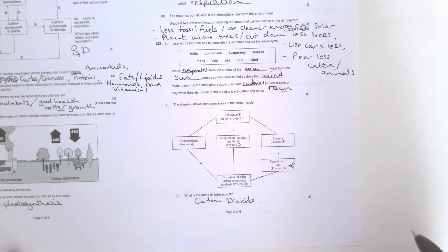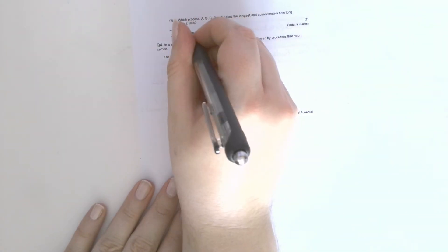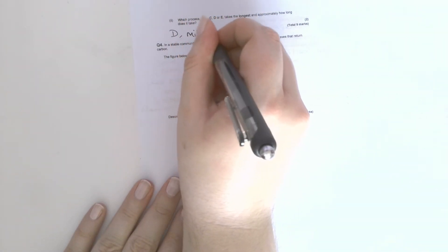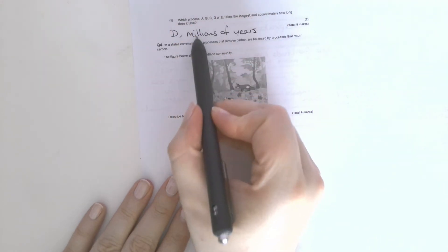Oil or fossilization, as you will know it from the diagram that I asked you to take down last week, takes millions of years. So your answer to that was D for one mark, and then millions of years. If you gave me a number as long as it was followed by millions, that was fine.